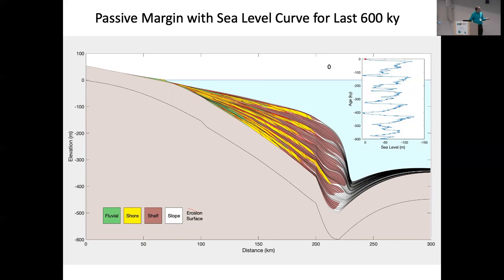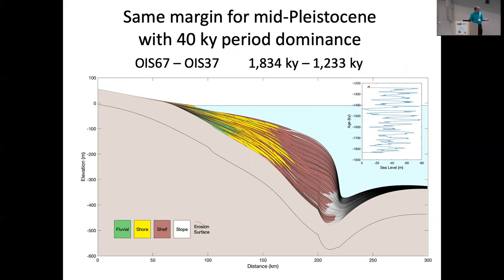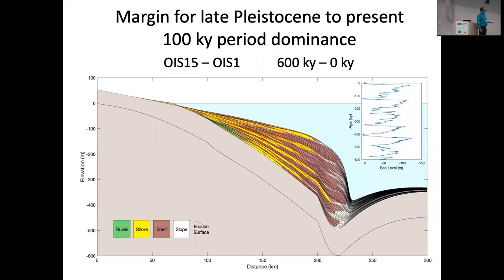If I take the same model and run it not with the last 600,000 years, but 600,000 years earlier in the Pleistocene when the 40k cycle was dominant, I get something like this, where it's lots of very fast patterns and not as much variation in sea level and you're tending to get much more vertically stacked fluvial, shore and shelf deposits. So I can actually, so here you can compare the two. You can see overall the over the last 600,000 years sea level has on average been lower and so the entire package is a little bit farther seaward in here.